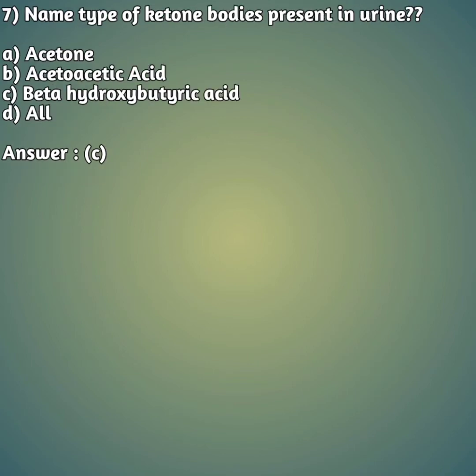Seventh question: name the type of ketone bodies present in urine — option A: acetone, option B: acetoacetic acid, option C: beta-hydrobutyric acid, option D: all. The right answer is option C — beta-hydrobutyric acid.